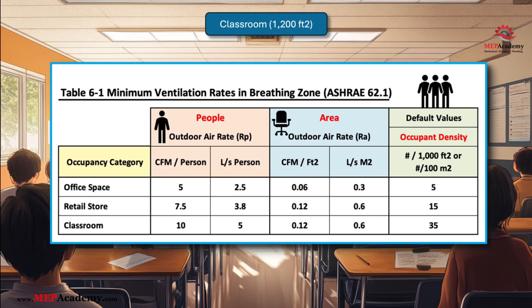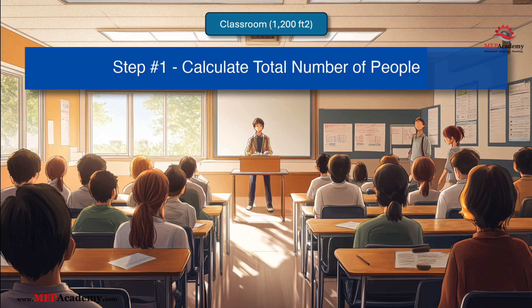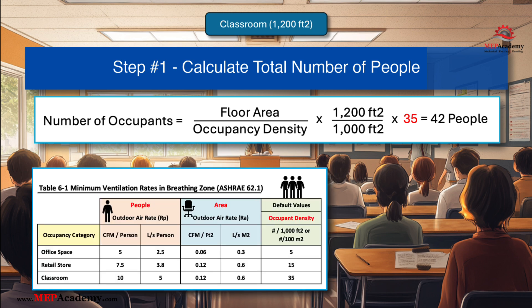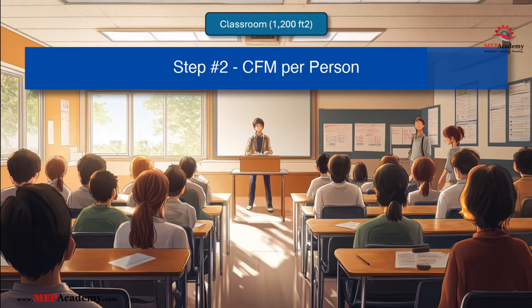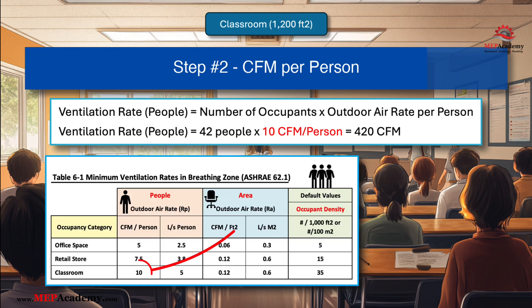Example 3: Classroom. Given data — Occupancy Type: Classroom; Floor Area: 1,200 sq ft; Occupancy Density: 35 people per 1,000 sq ft; Outdoor air rate per person: 10 CFM per person; Outdoor air rate per area: 0.12 CFM per sq ft. Step 1: Number of occupants = (1,200 sq ft / 1,000 sq ft) × 35 people per 1,000 sq ft = 42 people. Step 2: Ventilation rate (people) = 42 people × 10 CFM per person = 420 CFM.